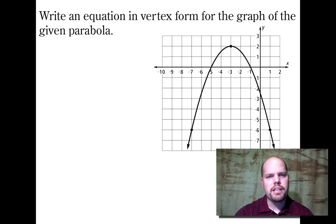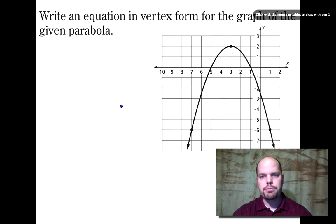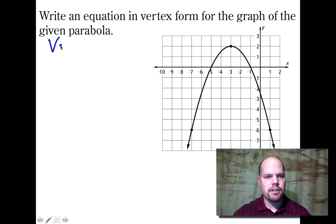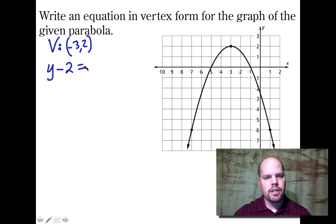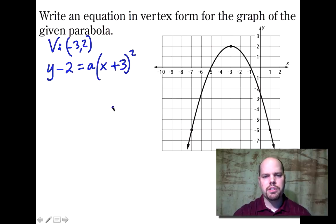Write an equation in vertex form for the graph of the given parabola. First, pick out the vertex — in this case the vertex is at (-3, 2). So we write y minus two equals A times the quantity x minus negative three, which becomes x plus three, quantity squared. We need to figure out what the coefficient A is.